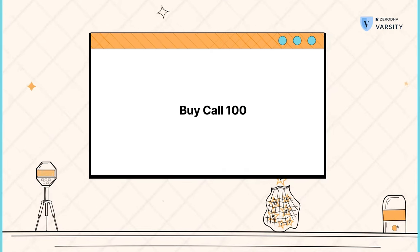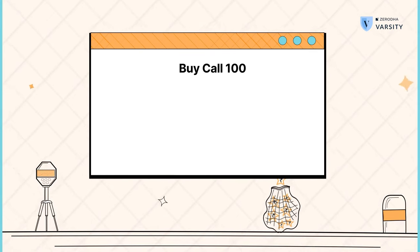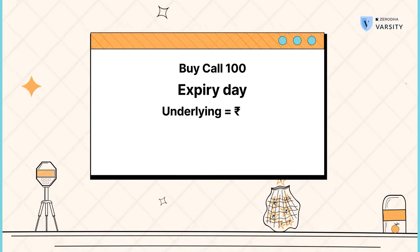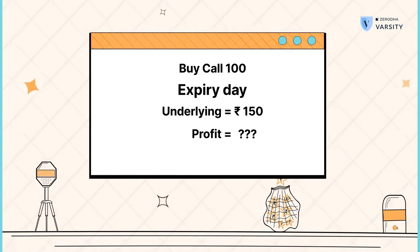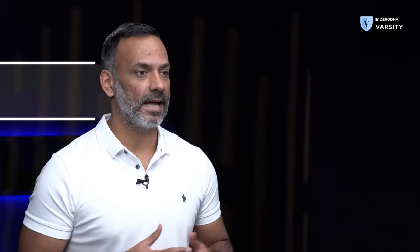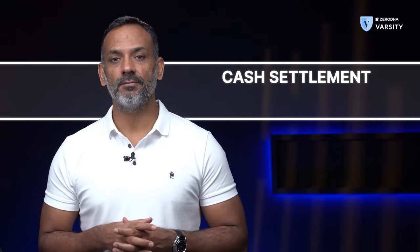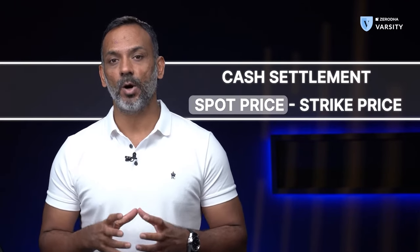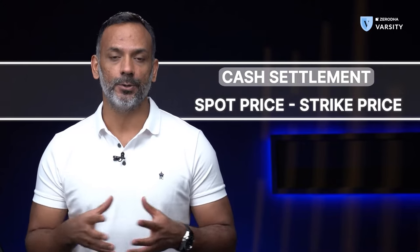Imagine that you buy a call option with a strike price of 100. Upon expiry, the underlying trades at 150. What do you think is your profit in this case? Clearly the profit is 50 rupees. Back in the days, stock options were settled in cash, meaning you didn't really have to buy the stock. Whatever is the difference between the spot and the strike, the difference would be directly cash settled to you.